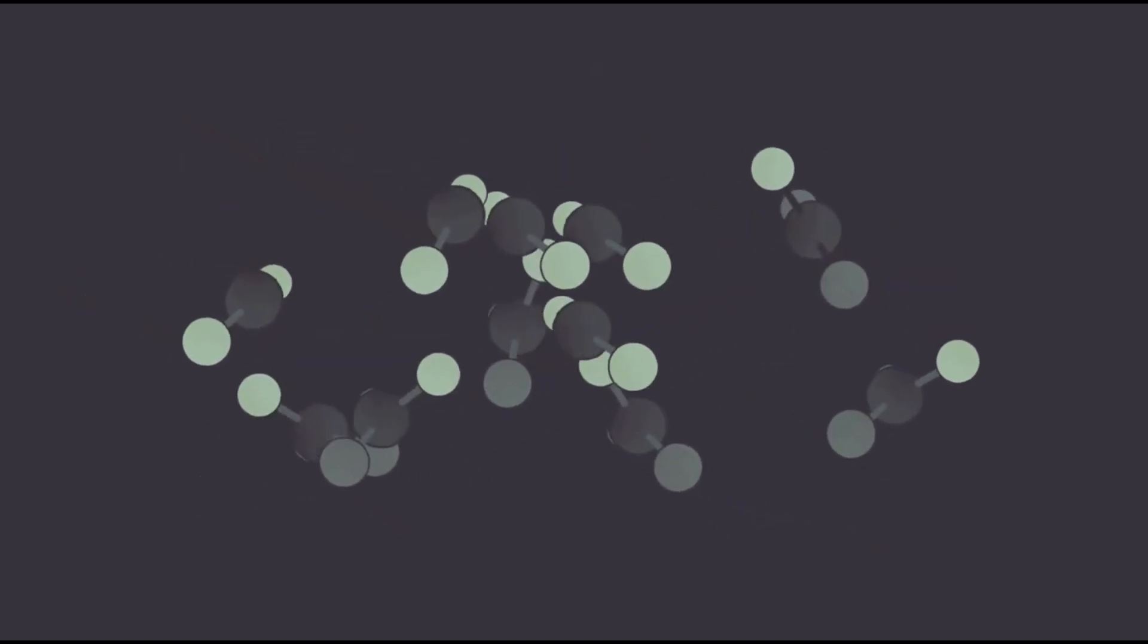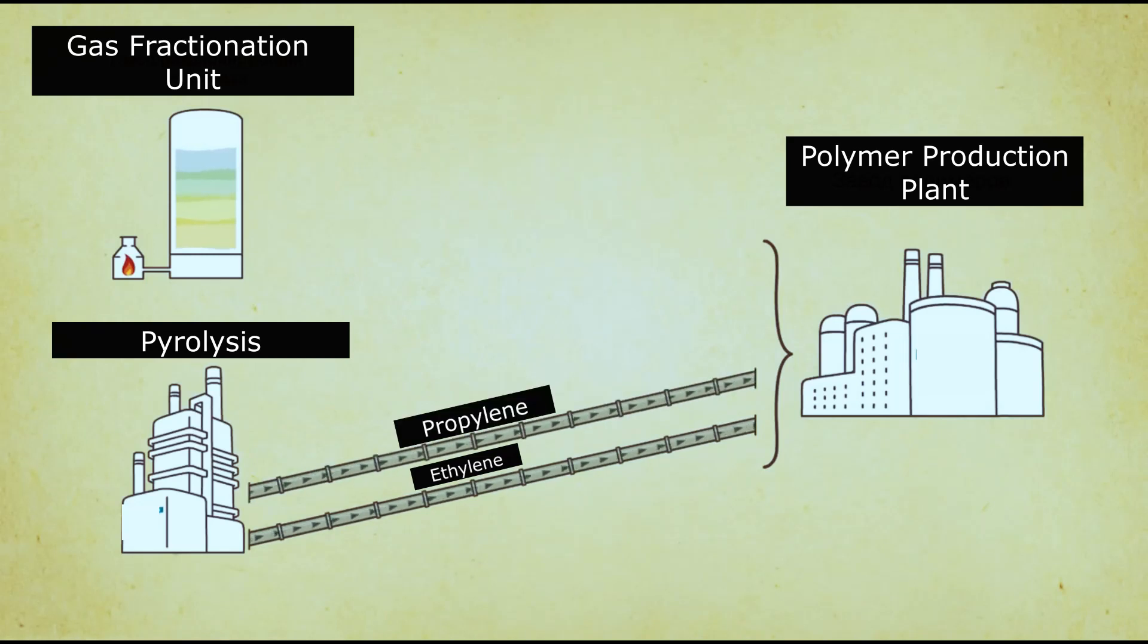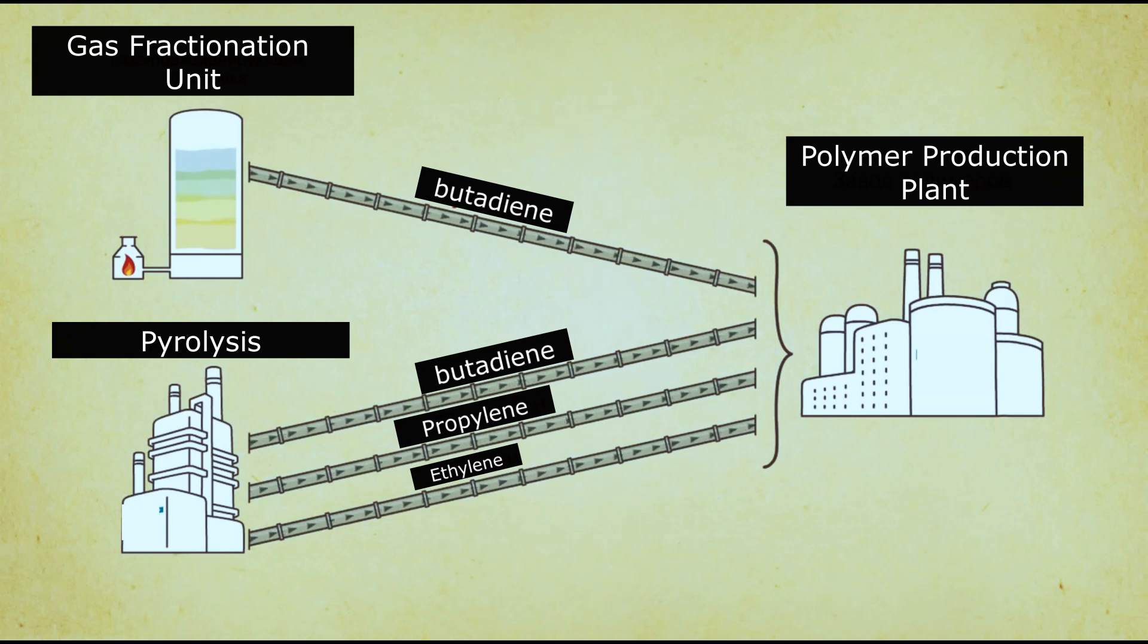In addition to ethylene and propylene, thanks to pyrolysis furnace and gas fractionation, other substances are obtained, badly needed to a modern man, for example, butadiene, which is also sent for polymerization for synthetic resin production.